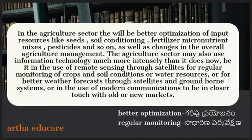In the agriculture sector, there will be better optimization of input resources like seeds, soil conditioning, fertilizer, micronutrient mixes, pesticides, and so on, as well as changes in overall agriculture management. The agriculture sector may also use information technology much more intensely — be it in the use of remote sensing through satellites for regular monitoring of crops and soil conditions, or water resources, or for better weather forecasts through satellites and ground-borne systems, or in the use of modern communications to be in closer touch with old or new markets.